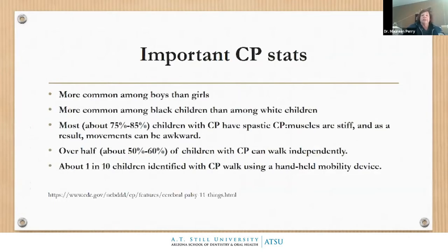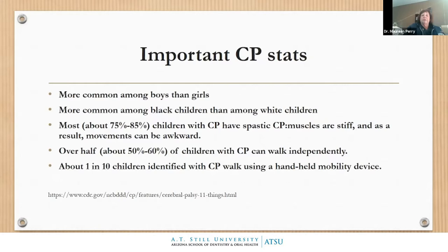CP is much more common in boys than girls, and more common in Black children than white children. Most patients will have spastic CP — too much muscle tone and spasticity with jerky movements. About 50 to 60 percent of kids can walk independently, and about one in ten will walk with something handheld like crutches, a cane, or a rolling walker.